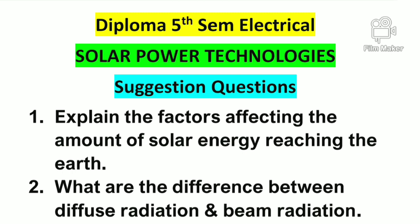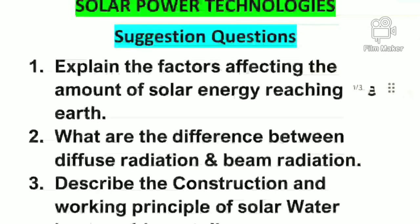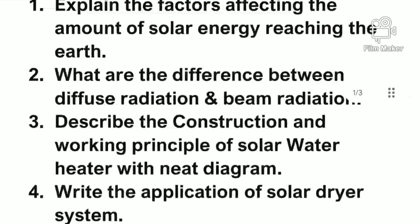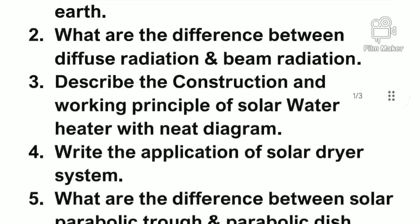First question: explain the factors affecting the amount of solar energy reaching the Earth. Second question: what are the differences between diffuse radiation and beam radiation? Third question: describe the construction and working principle of a solar water heater with a neat diagram. Fourth question: write the applications of a solar dryer system.